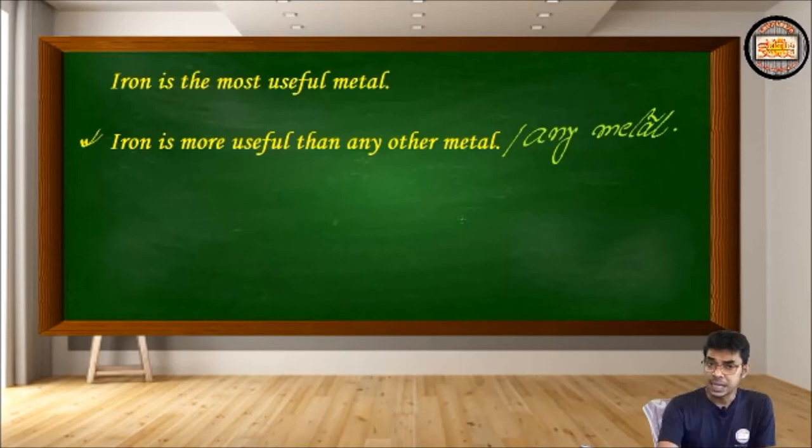Just consider if you produce this sentence as iron is more useful than any metal. So actually, here other, this word is dropped. And any metal, it includes all the metals. Actually, when we use any, we consider everything, every metal, each and every metal there. That means all metals, but our consideration goes separately.